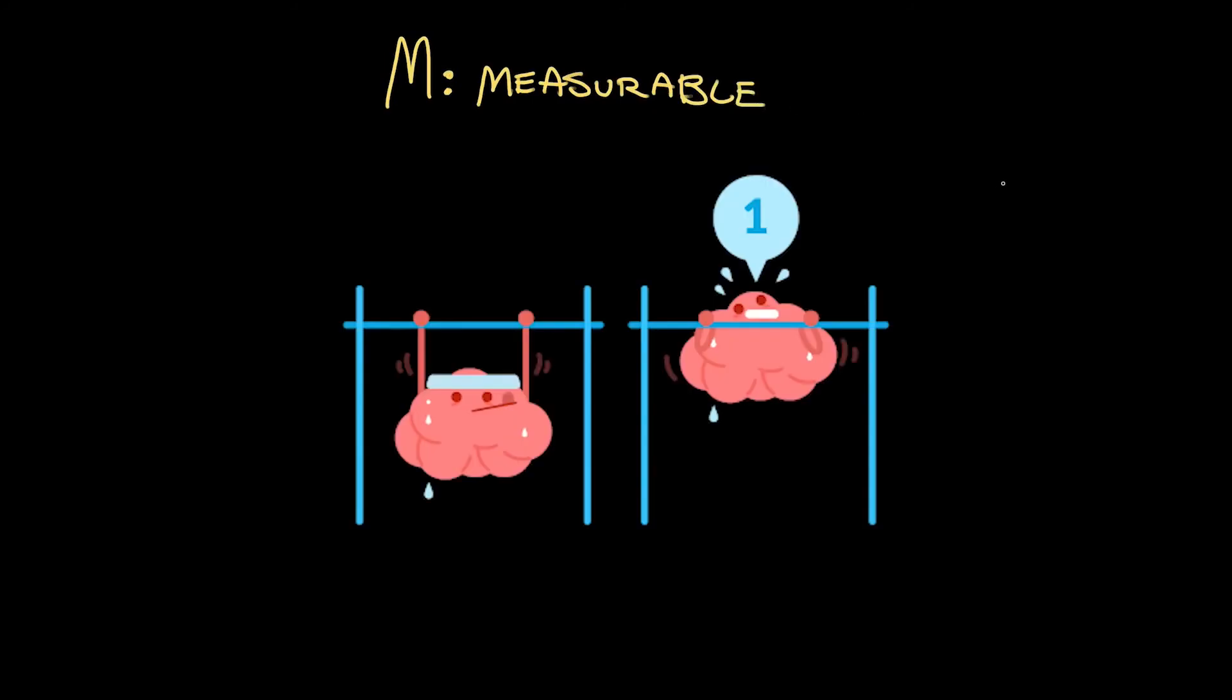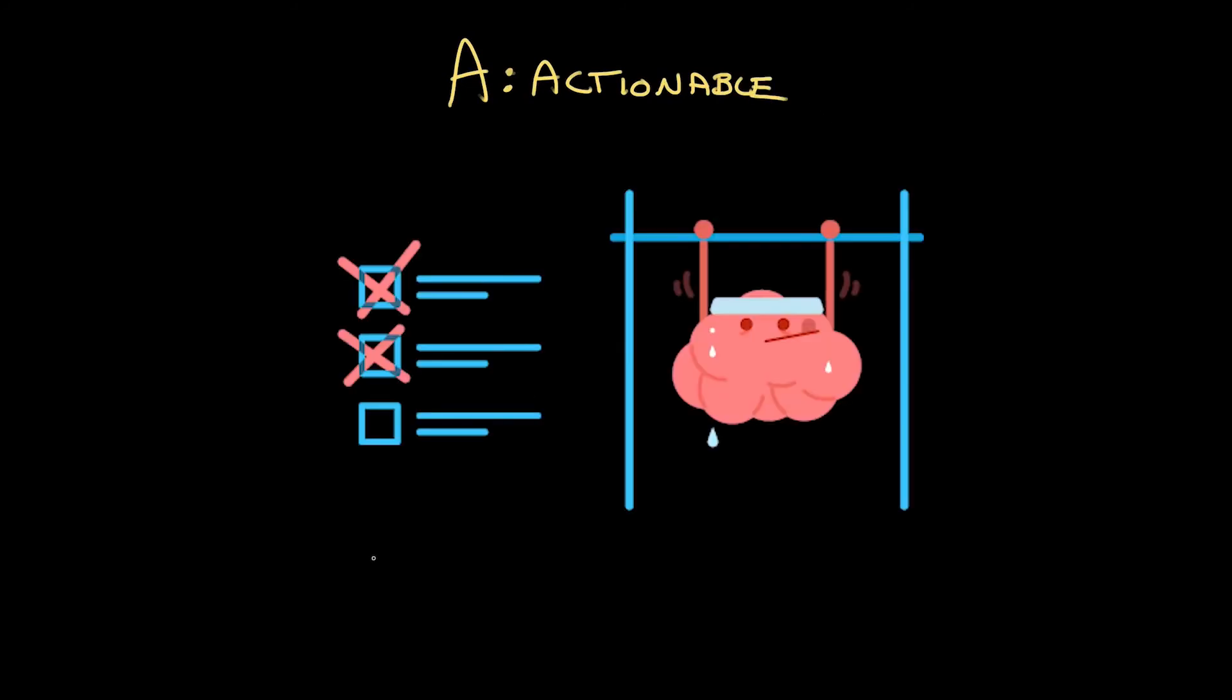M is for measurable. What's the metric for TP's success? Two in a row. Two pull-ups, one right after the other. You've either done it or you haven't. Measurable. A is for actionable. Can it be broken down into individual tasks? Yeah. Going to the gym three times a week to practice feels very actionable indeed.